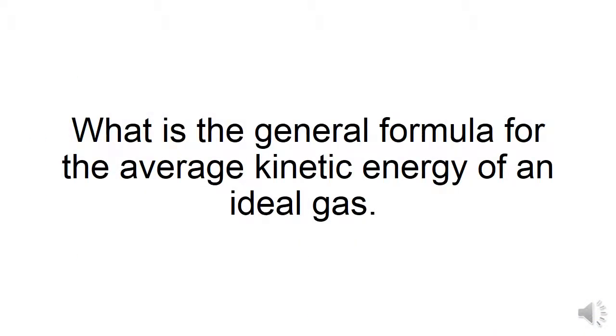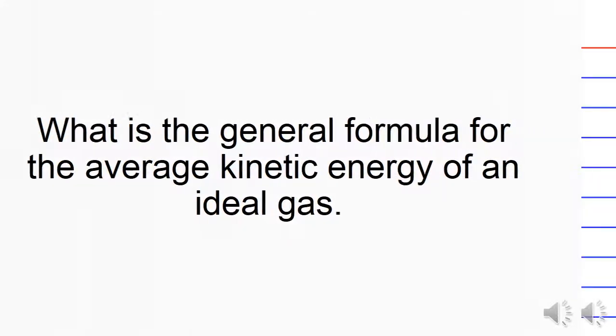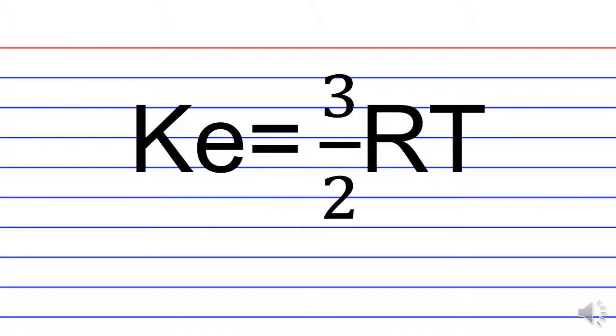What is the general formula for the average kinetic energy of a monatomic Ideal Gas? Monatomic means just one atom. The formula is KE equals three-halves times RT. R is the universal gas constant, that's 8.314 joules per mole kelvin, and temperature is in kelvin.